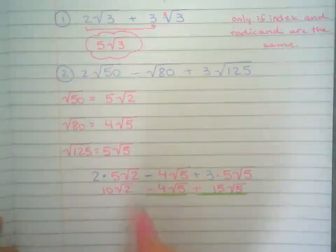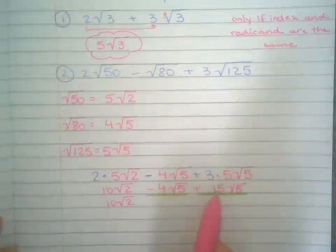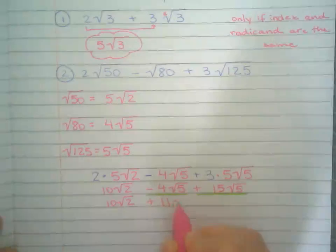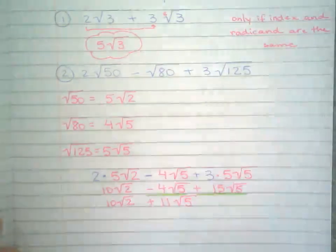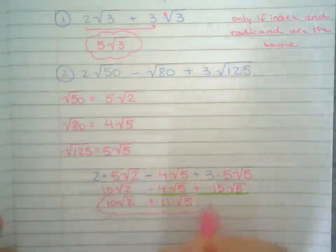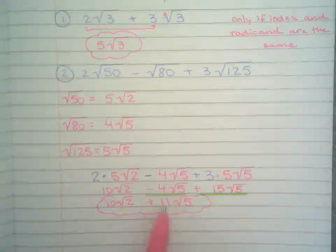I cannot do anything with 10√2. So 15 minus 4 is 11, so plus 11√5. There's nothing I can do there. So this is my final answer: 10√2 + 11√5.